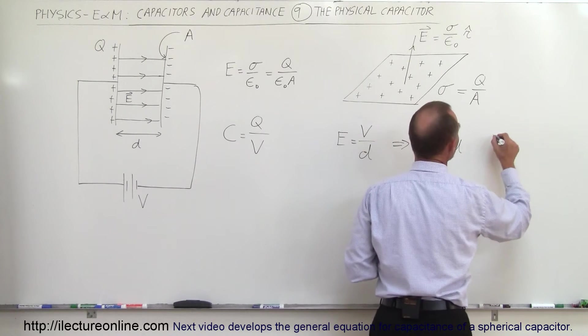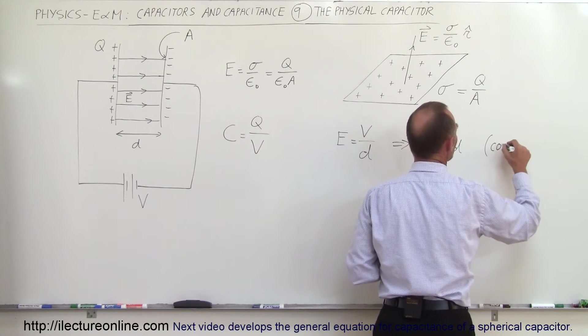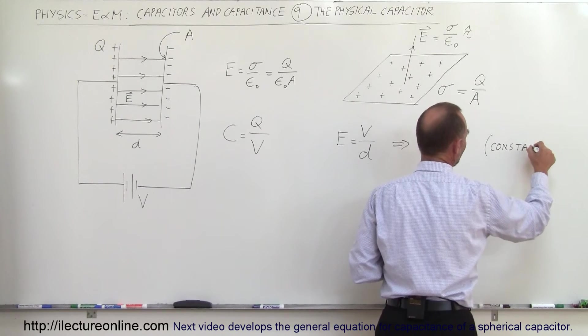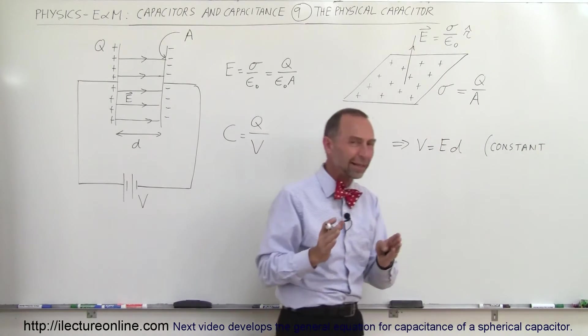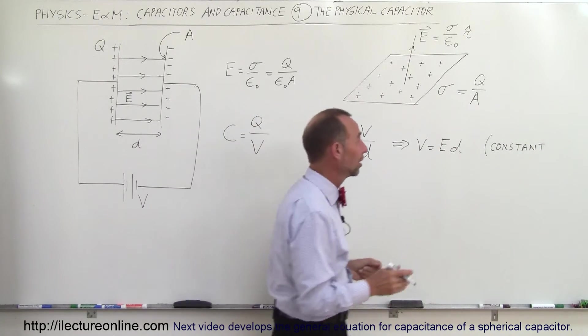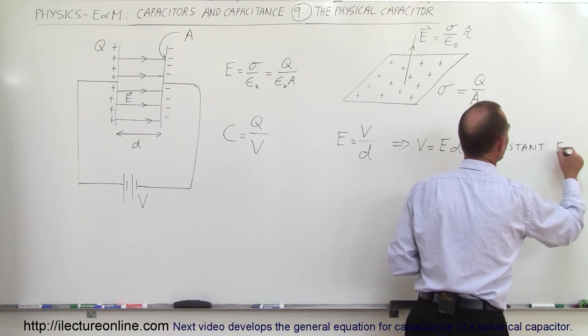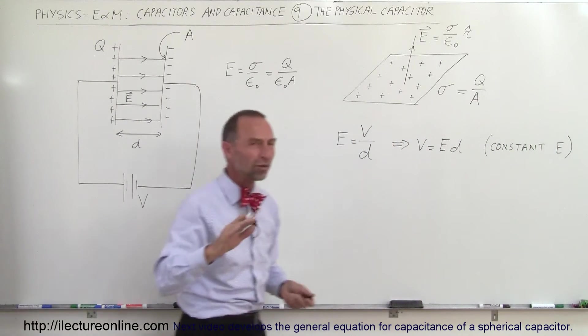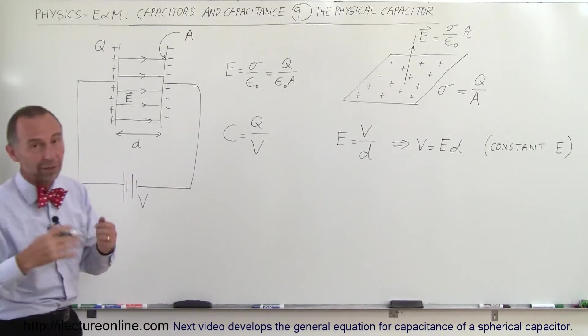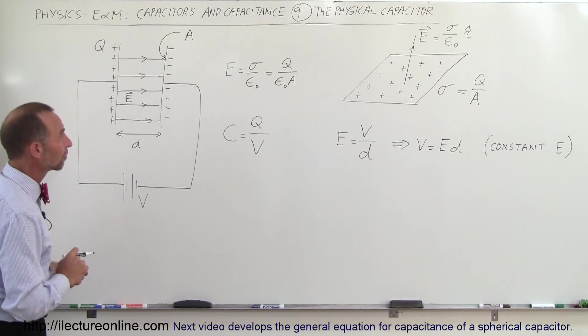Of course, that's only correct if we have a constant electric field. And in the case of capacitor plates, when they're side by side like that, we're dealing with a constant electric field. So this is correct in this particular case. We'll look at some other examples where that will not be the case and we'll have to handle it a little bit differently.